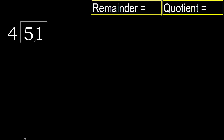51 divided by 4. 5 is not less, therefore with 5: 4 multiplied by which number is nearest to 5 but not greater? 4 multiplied by 2 is 8 — 8 is greater. 4 multiplied by 1 is 4 — not greater. 5 minus 4 is 1. Next: 11. 4 multiplied by...